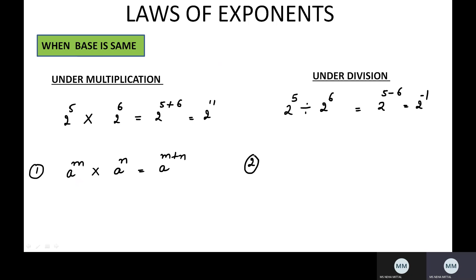So the second rule is: if you have the same base — a raised to the power m divided by a raised to the power n — the powers must be different and if they are getting divided, the rule is that the powers will get subtracted: a^m ÷ a^n = a^(m−n).